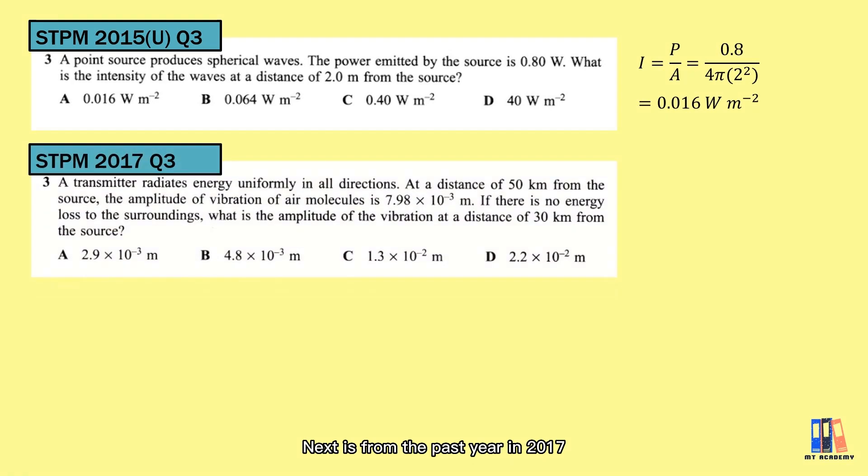Next is from STPM 2017. It is given that at a distance of 50 kilometers, the amplitude is 7.98 millimeters. If there is no energy loss to the surrounding, what is the amplitude of the vibration at the distance of 30 kilometers. So here, just apply the relation we have learned that amplitude is inversely proportional to the distance. We have the ratio equation A1·r1 = A2·r2. So put in the values, answer would be 1.33 × 10⁻² meter.